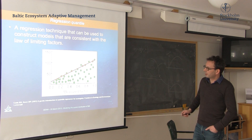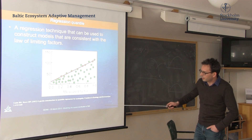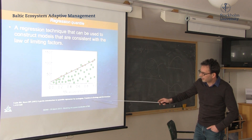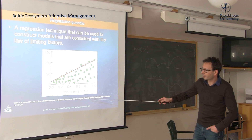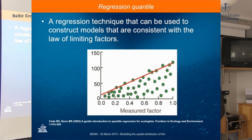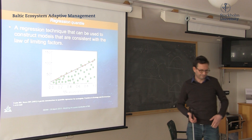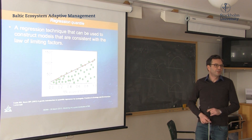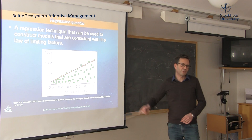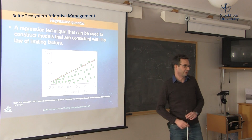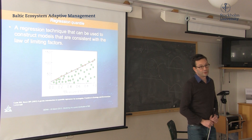I can circulate the reference if you want. There's a paper by Cadet and Nune called 'A Gentle Introduction to Quantile Regression for Ecologists,' which I think is a good starting point. The rest of Cadet's papers are not so gentle, for ecologists at least.